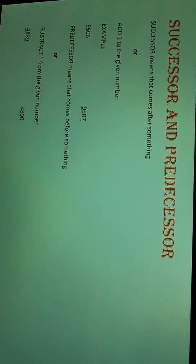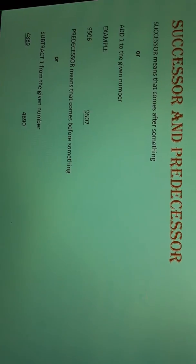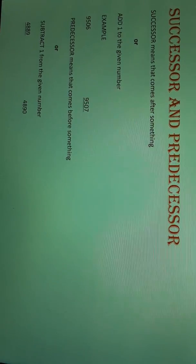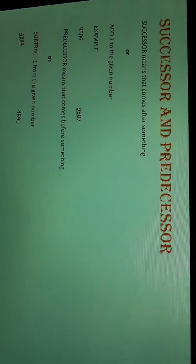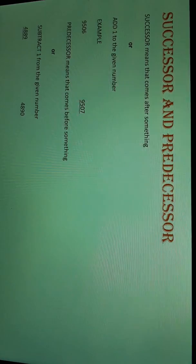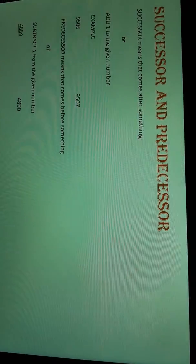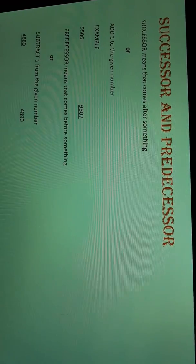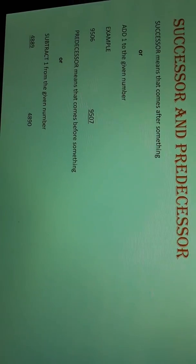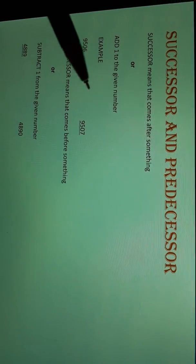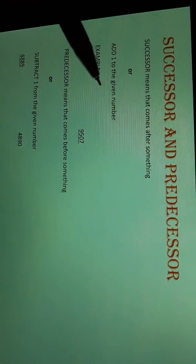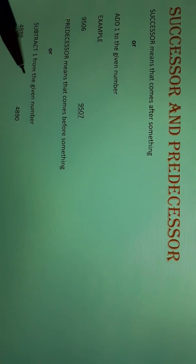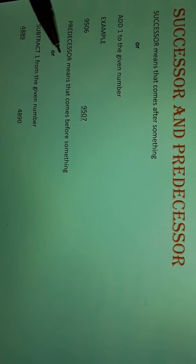Successor means going ahead — the number that comes after something. And predecessor — 'pre' means before — so predecessor means the number that comes before something. The rule is: if we add 1 to the given number, we get its successor, and on subtracting 1 from the given number, we get its predecessor.